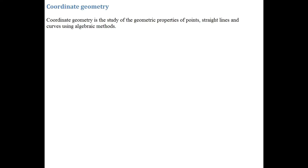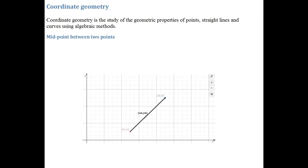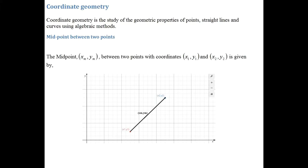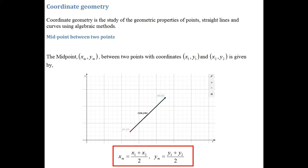The first result I'm going to go through is how we calculate the midpoint between two points. If we have two points which form a line, so if one of the points has coordinates x1, y1, and the other having coordinates x2, y2, we can work out the coordinates of the midpoint, denoted as xm, ym. In order to work out xm, all we do is add the x coordinates and divide by two.